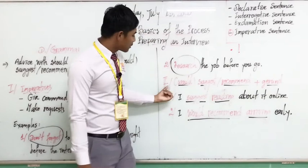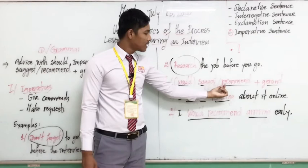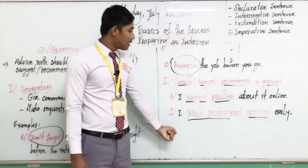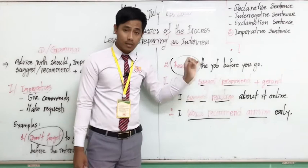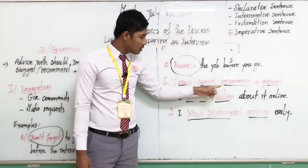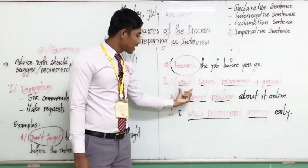Now, number two: we are going to talk about 'would suggest/recommend' plus verb-ing. With the verbs 'suggest' and 'recommend,' they are used to make a recommendation or give advice. These two verbs always follow with verb-ing (gerund). For example: 'I suggest reading about it online.' Here, 'suggest' is followed by 'reading,' which is a gerund.